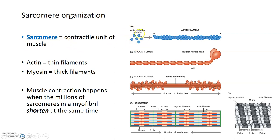Actin is a globular small protein that can assemble into a thin filament that is polarized — it has both a negative and a positive end. Myosin molecules, particularly myosin 2 that makes up the thick filaments in muscle cells, are organized as dimers or sets of two, with two heads and two tails that wrap around each other. Each of these heads has ATPase function — the ability to hydrolyze ATP into ADP and inorganic phosphate.